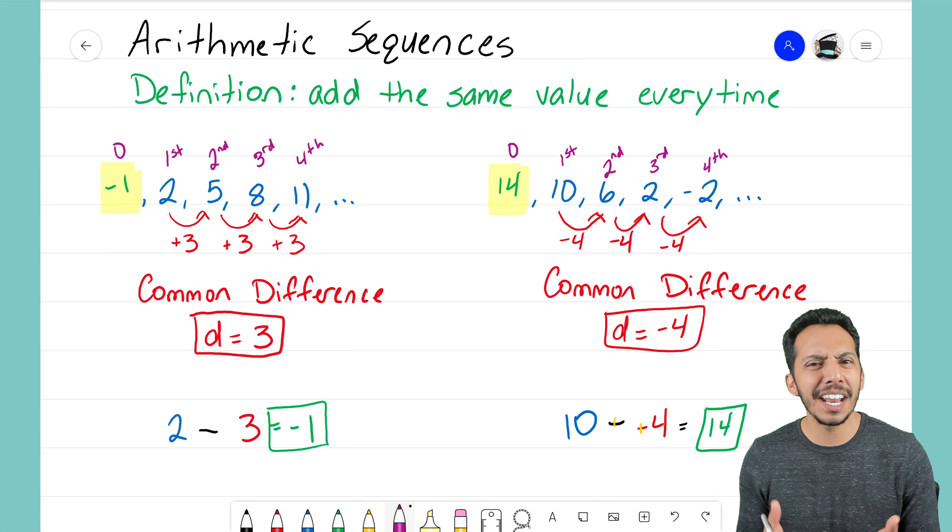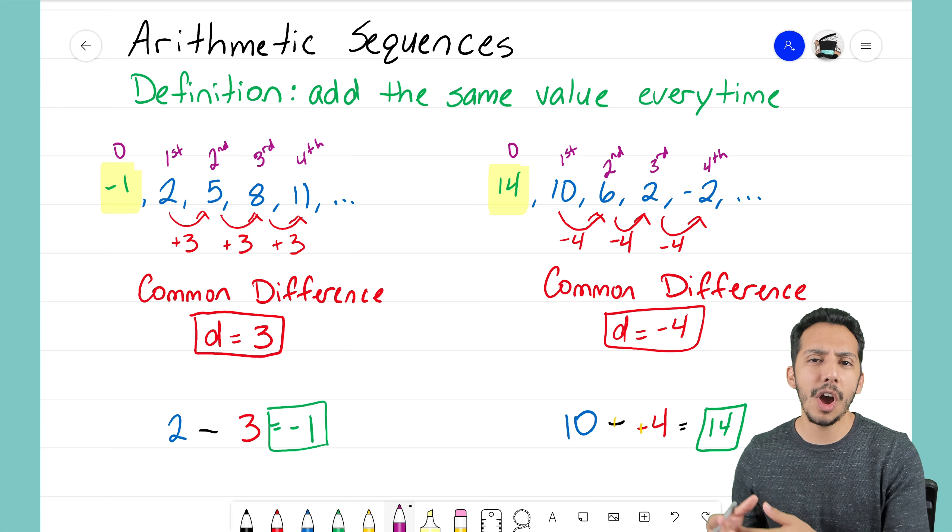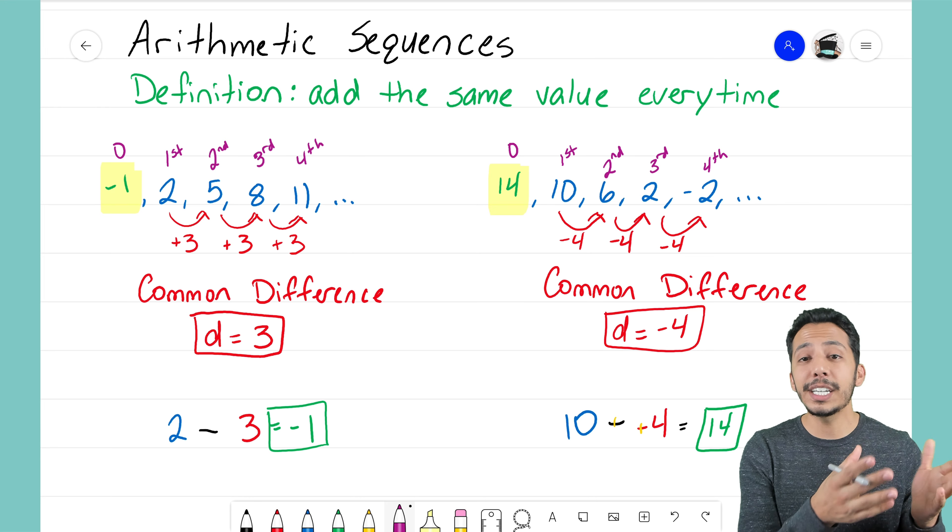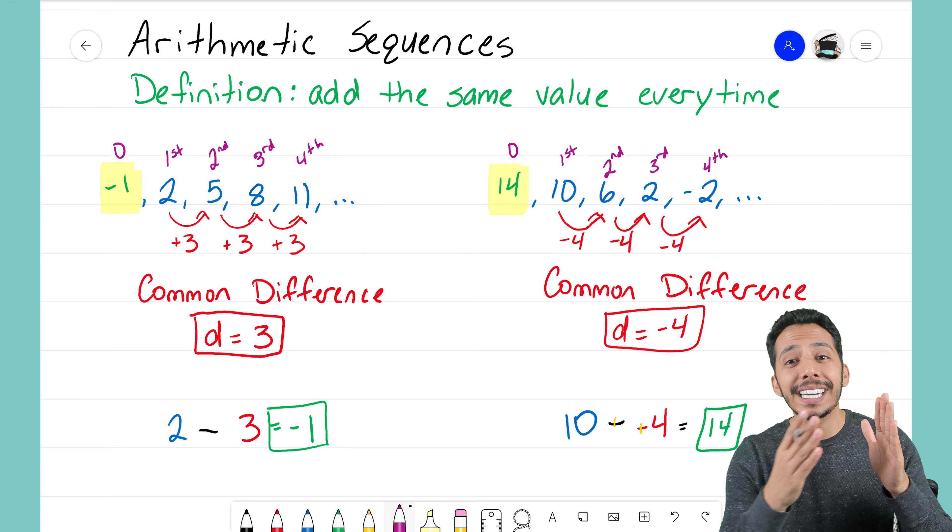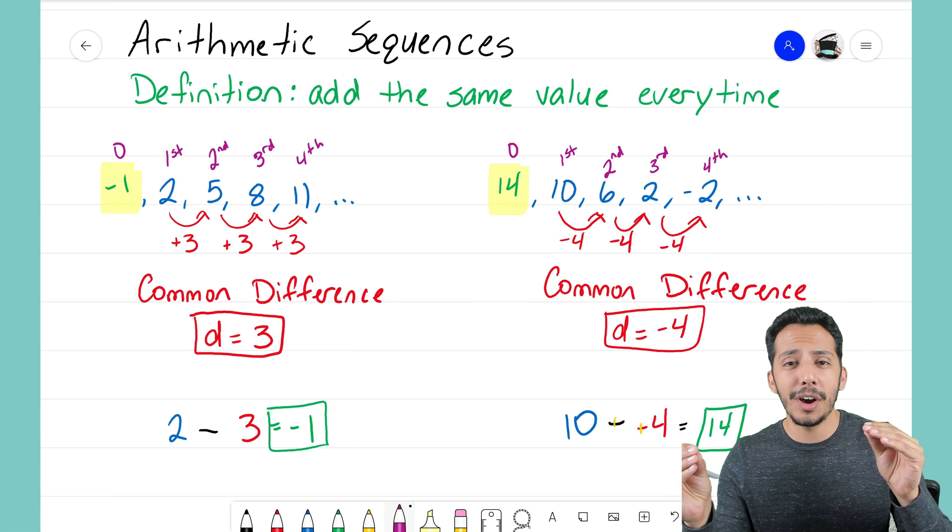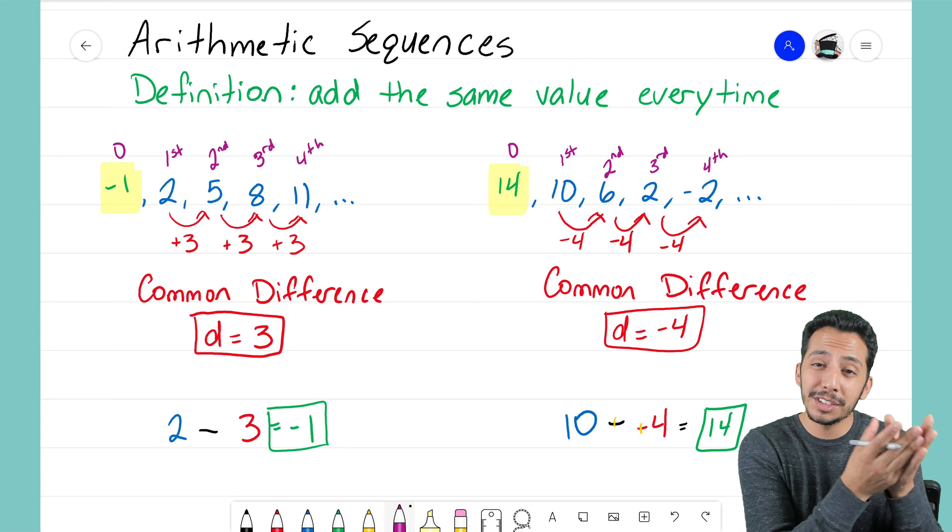And again, that should make sense. The sequence on my right here was decreasing, so the numbers did get smaller as it went on. So my zero term there should be bigger than 10.